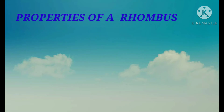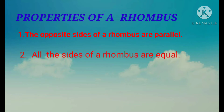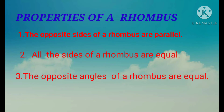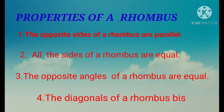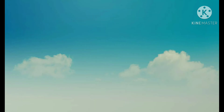Properties of rhombus are: the opposite sides of a rhombus are parallel, all the sides of a rhombus are equal, the opposite angles of a rhombus are equal, and the fourth property is the diagonals of a rhombus bisect each other at right angles, that is 90 degrees.